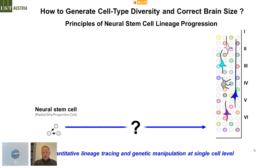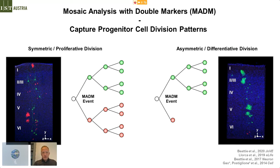The prime choice we are currently taking is mouse genetics and the method called mosaic analysis with double markers, or MADAM. This was really the driving force for me to choose my postdoc in the lab of Liqun Luo, because one week after the paper came out — the first one, 2005, by Hui Song — I really sent my application because I thought this is so cool and I want to work on this method. The most critical property of MADAM is that it can capture progenitor cell division patterns.